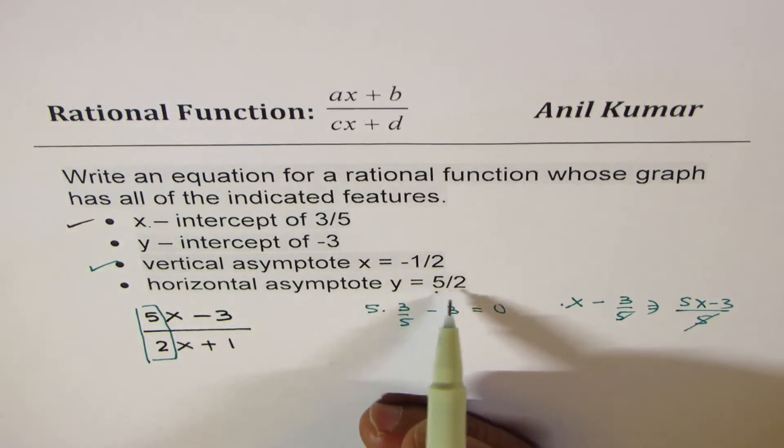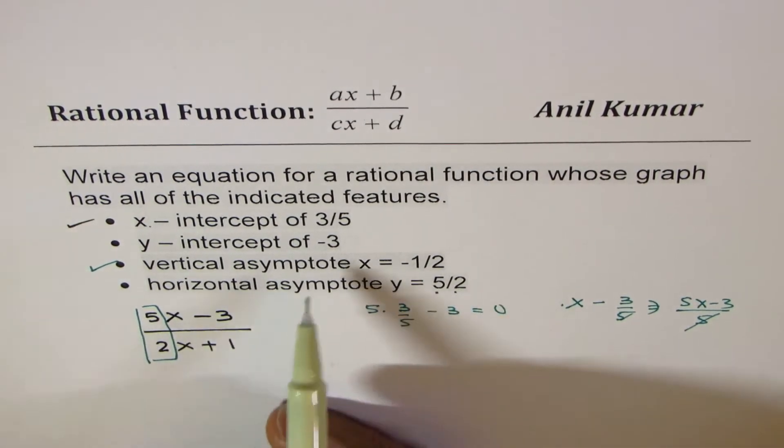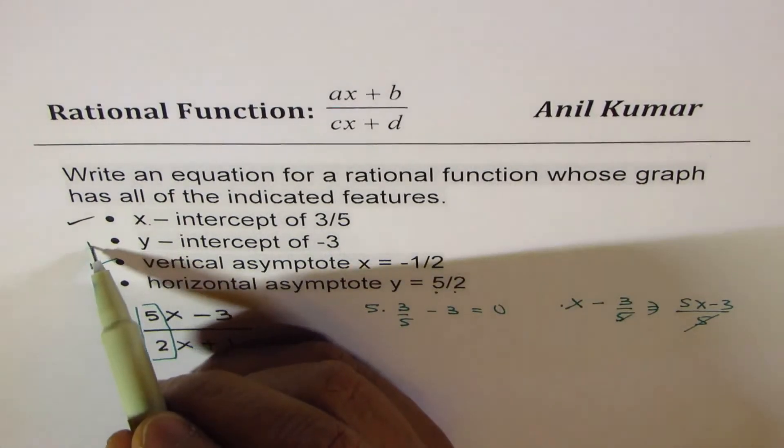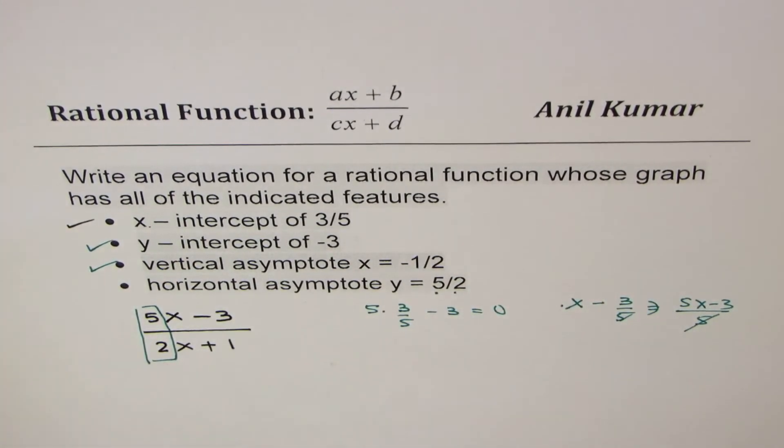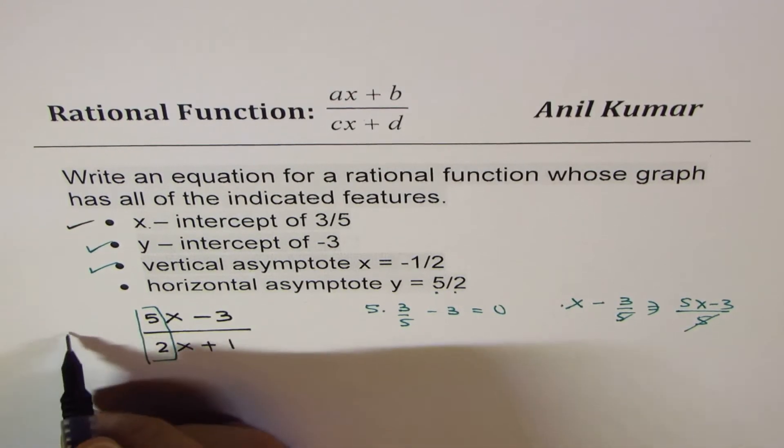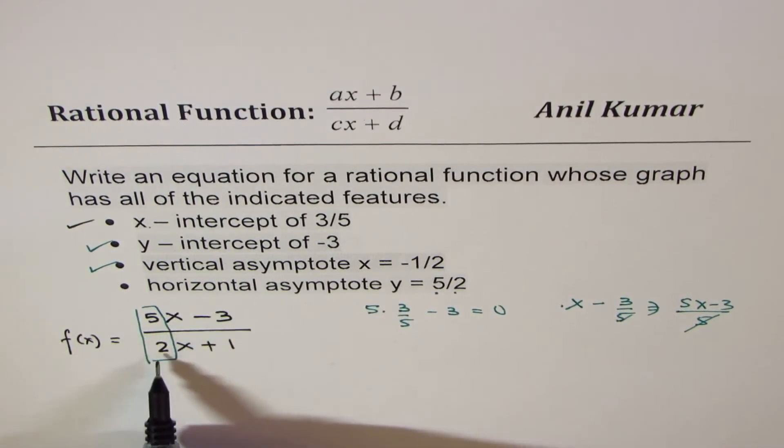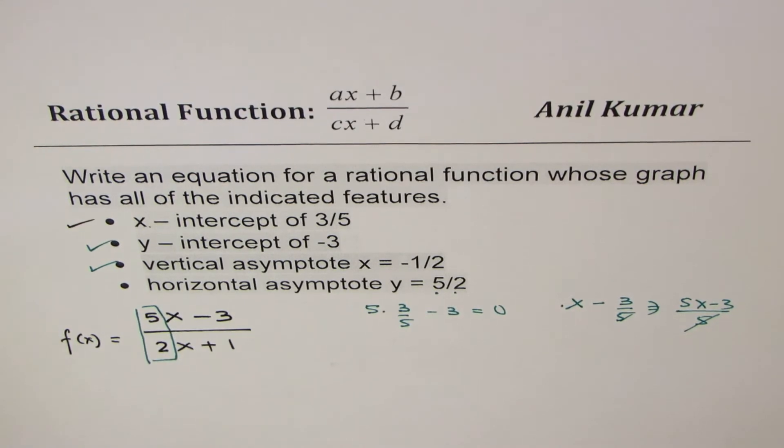Horizontal asymptote is ratio of these two. As you can see, it is 5 over 2. That is correct. If I substitute x equals to 0, I get minus 3. So this condition is also met. So that becomes our function. So you can see the function for us is 5x minus 3 over 2x plus 1. Perfect.